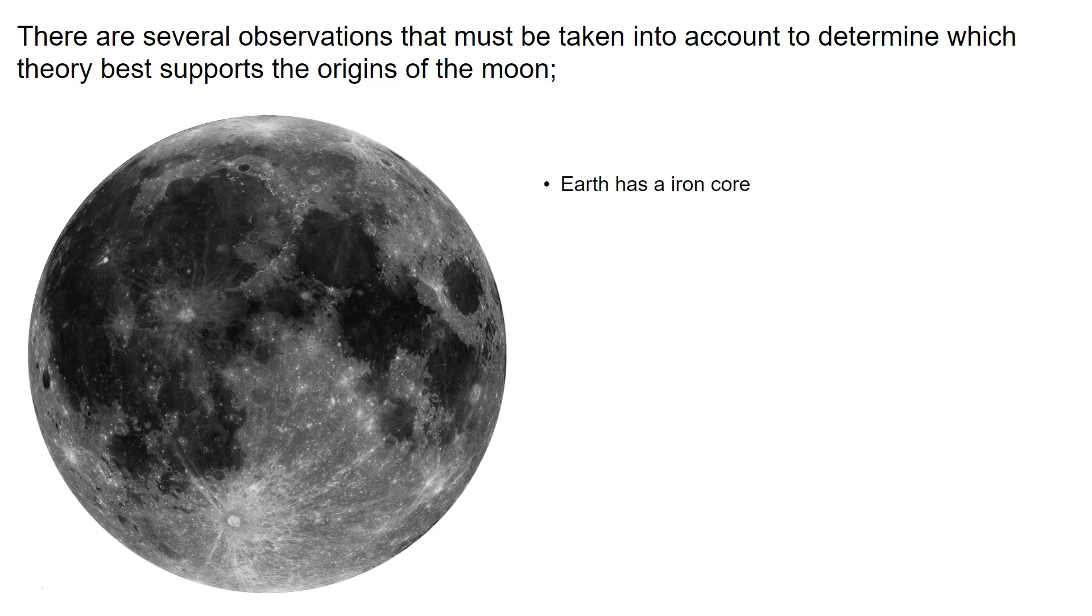The first observation is that Earth has an iron core, while moon rocks do not have any iron. Earth's average density is 5.5 grams per cubic centimeter, whereas the moon's average density is only 3.3 grams per cubic centimeter.